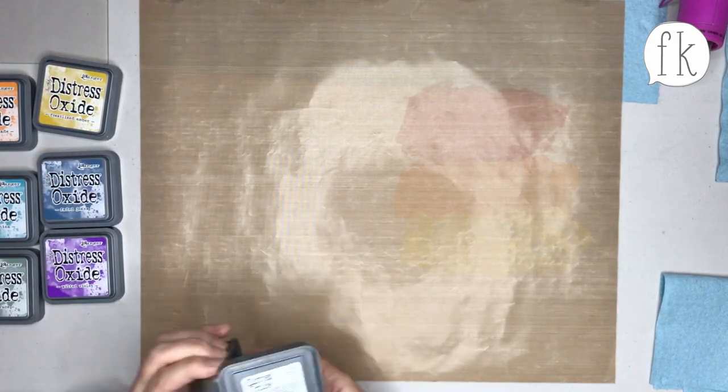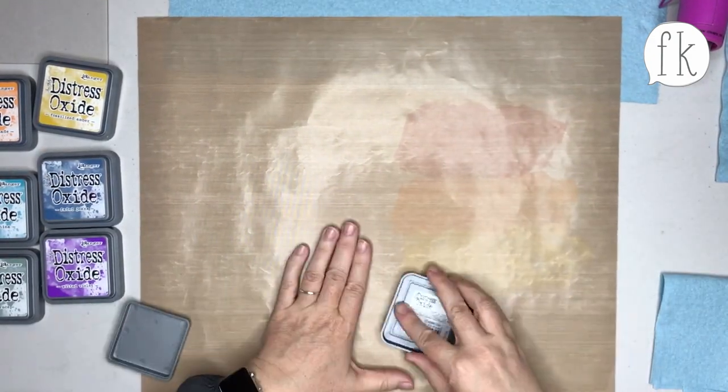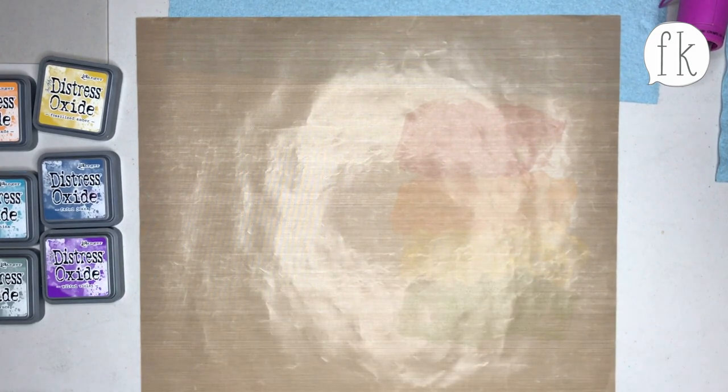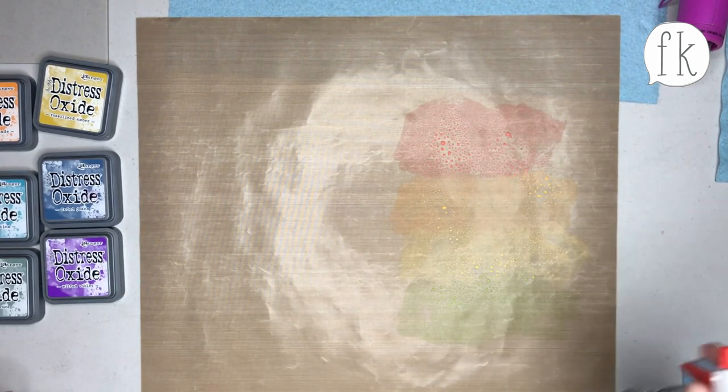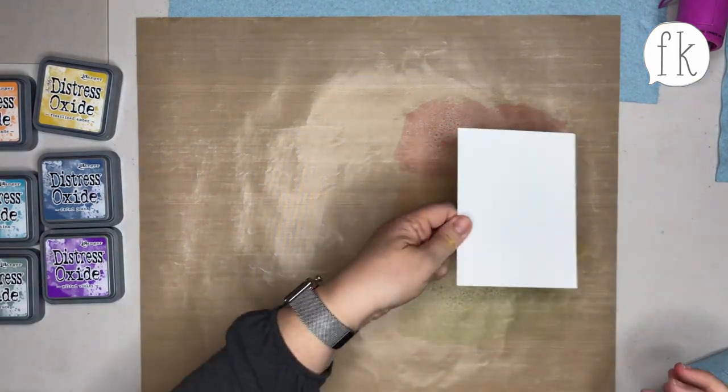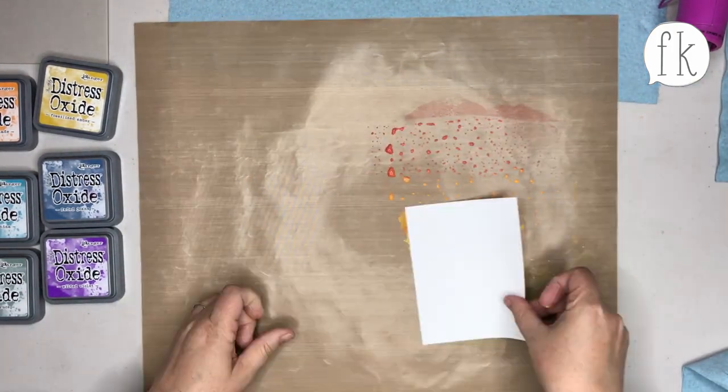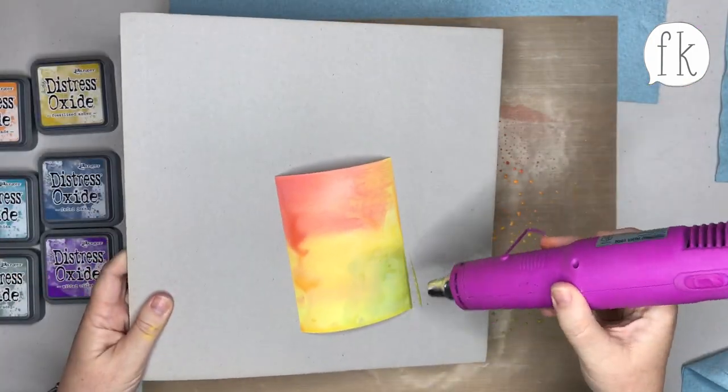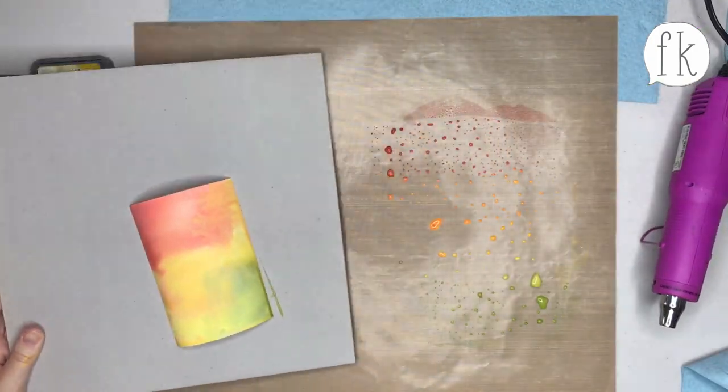They're a little bit small for my hands. I'm a farm girl, I got big hands. Watch what happens when the card goes through. You just kind of swipe it through and you get these super bright colors. Look at how vibrant they are. Now this is a wet technique, so what I'm doing is I have the dryer going.